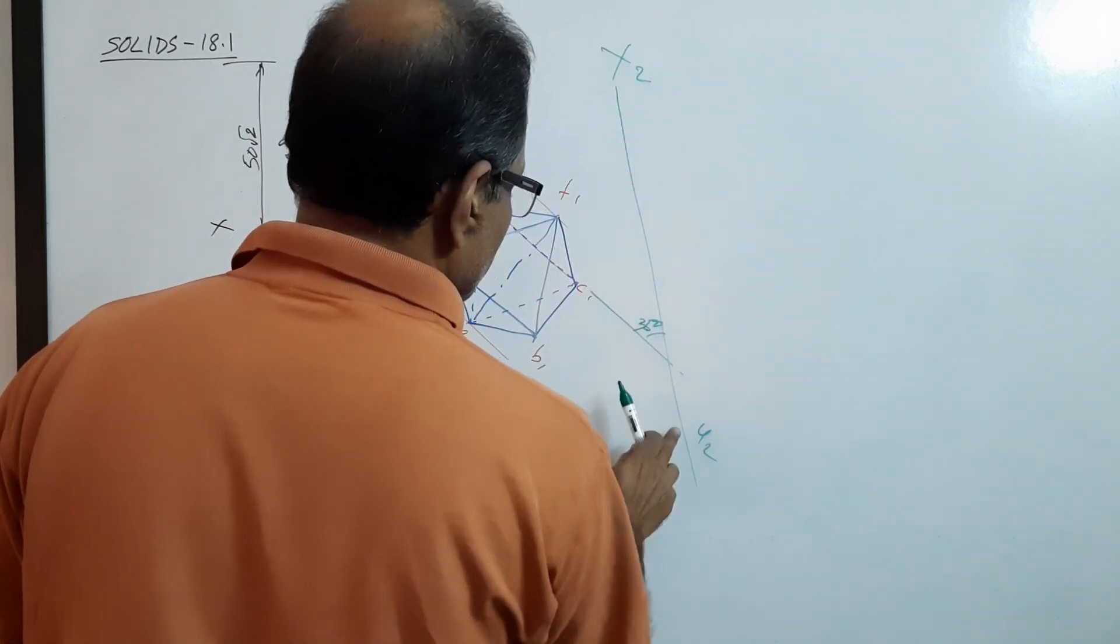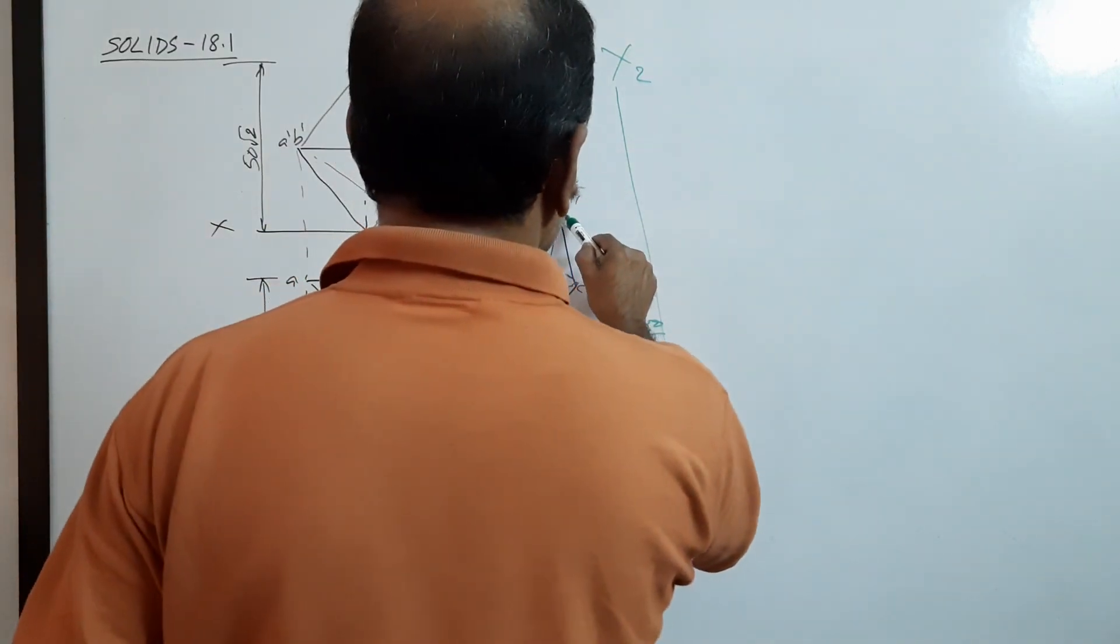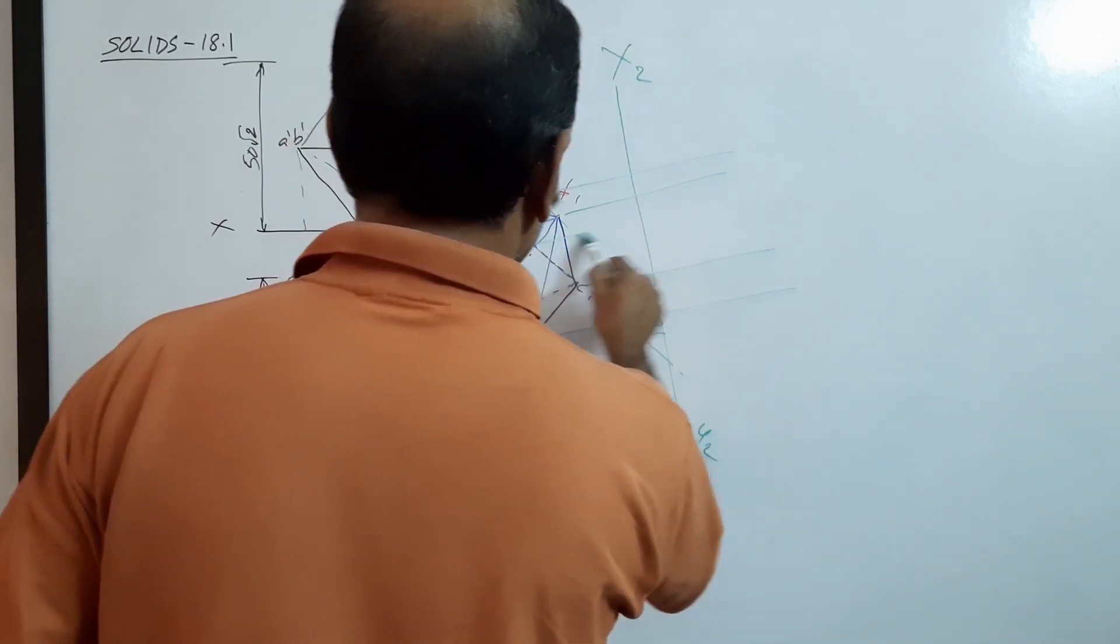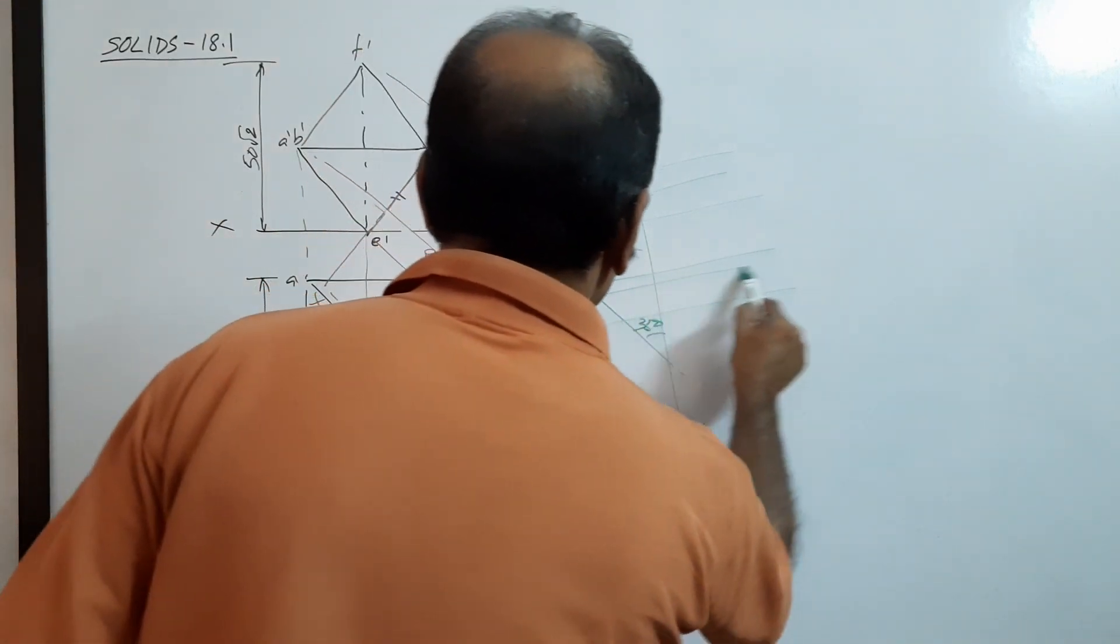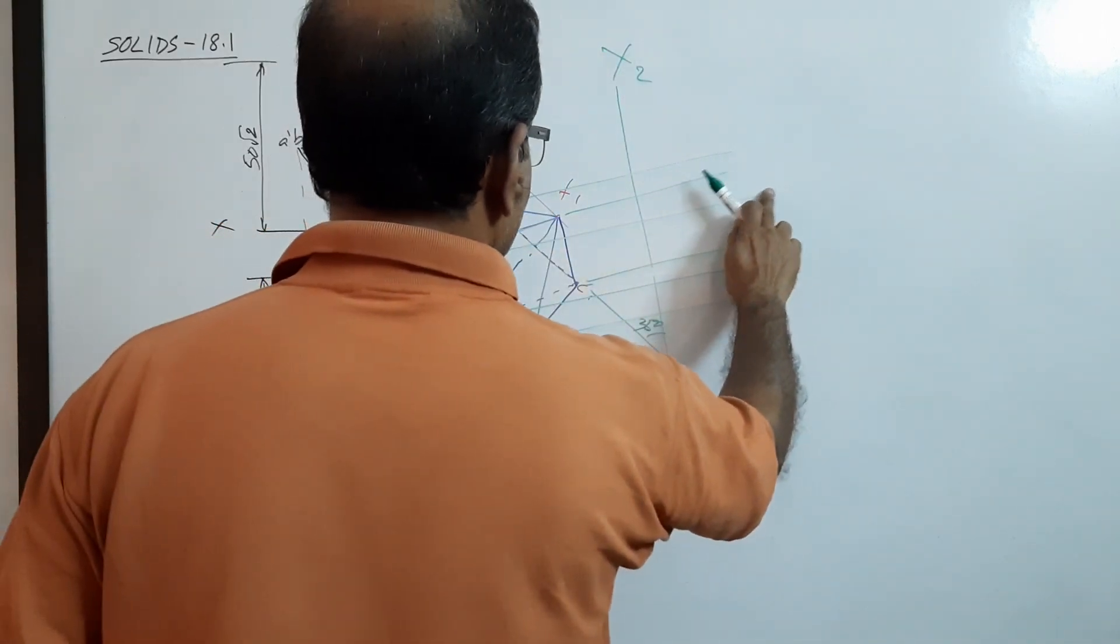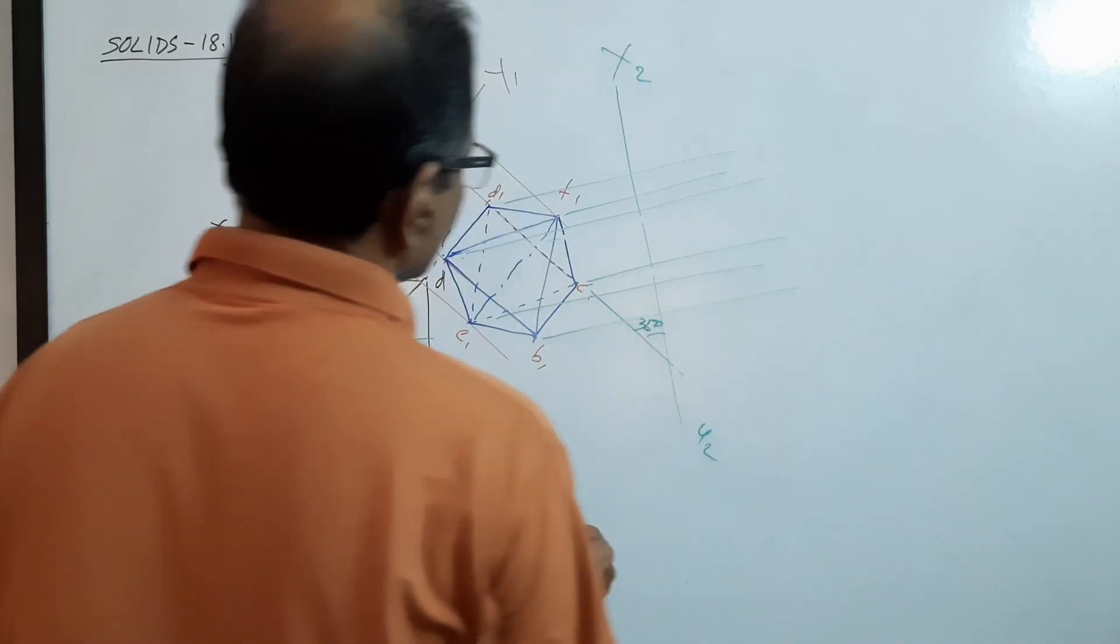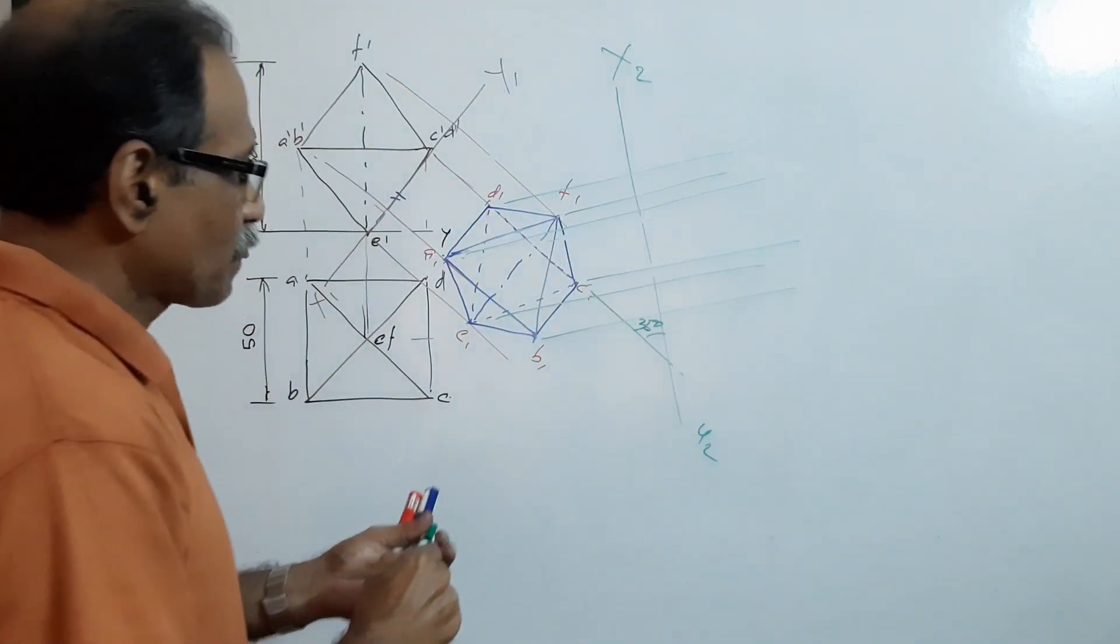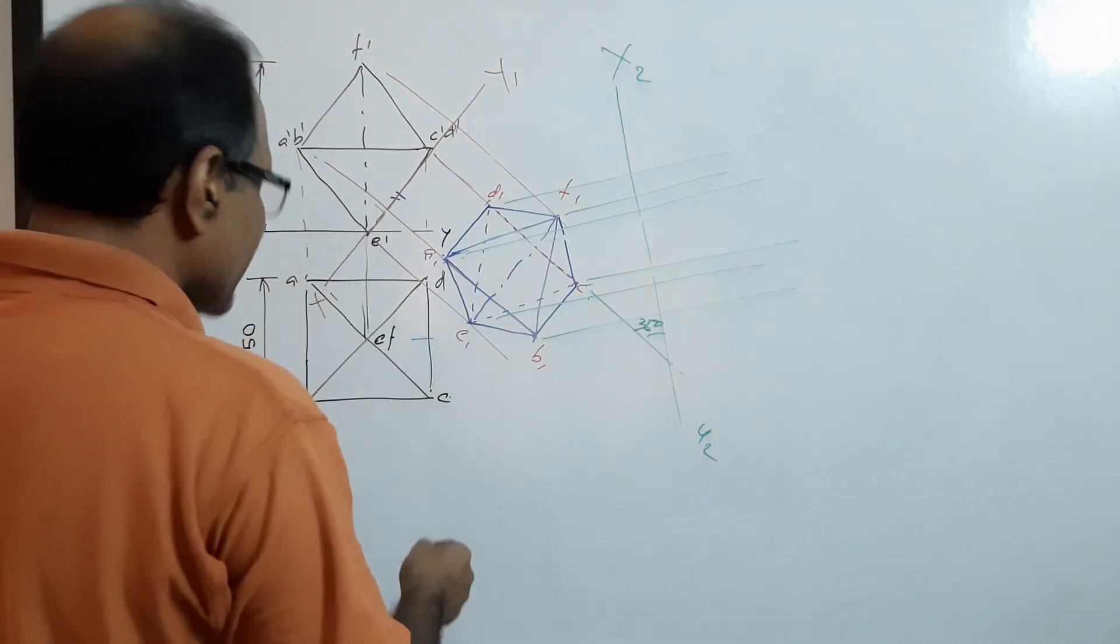X2Y2. Now draw new projectors. Six projectors. C dash, D dash, and E dash are zero distance away.